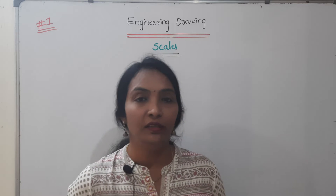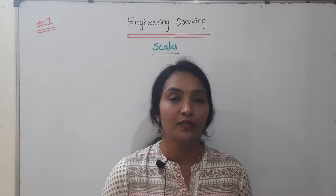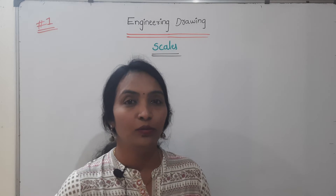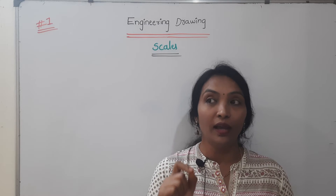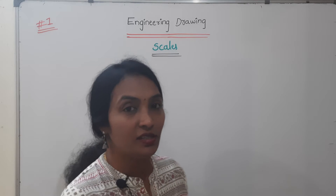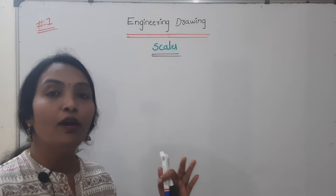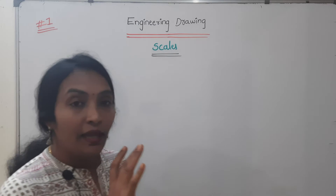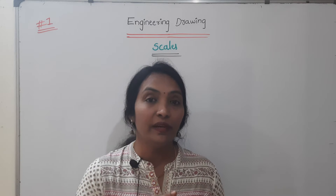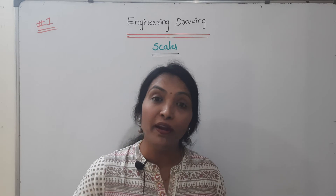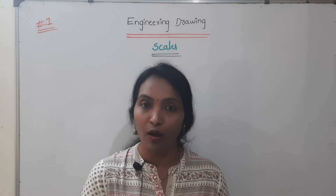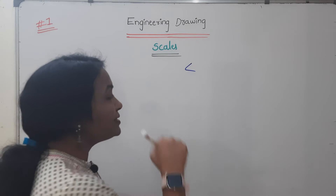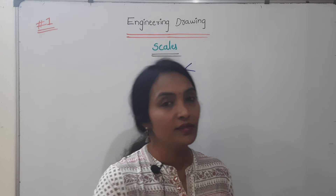Now, if you're doing a building — a college building that covers two or three acres — but you're designing it in Civil Engineering on A4, A6, or A8 paper, the building needs to be represented on paper in reduced form. That means it is a reducing scale.